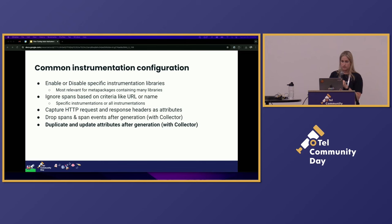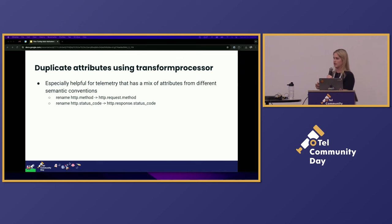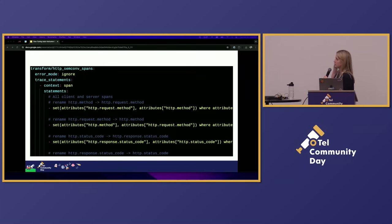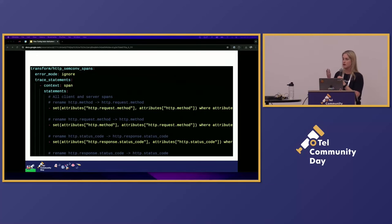The last collector option I want to talk about is updating your attributes with a transform processor. This came up with HTTP attribute stabilization — different languages are in different states as far as what version they're using, so their telemetry might emit the same type of field but with a different name. The transform processor uses OTTL and allows you to say something like: I have 'http.request.method' and I also want 'http.method' on that span because my other language is still using 'http.method'. This becomes really useful for maintaining parity across spans of similar types without worrying about them being at different attribute name levels.